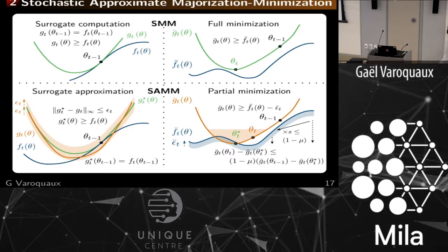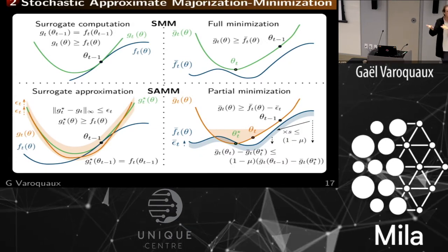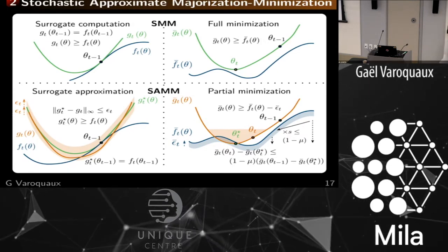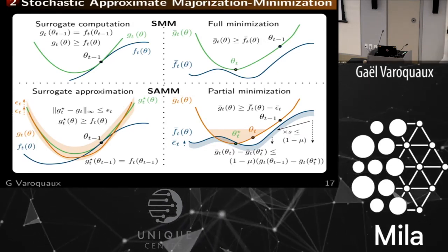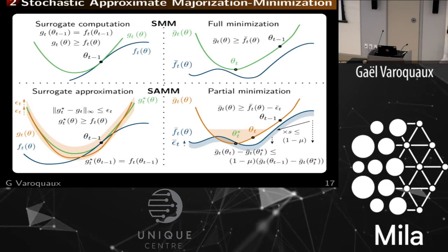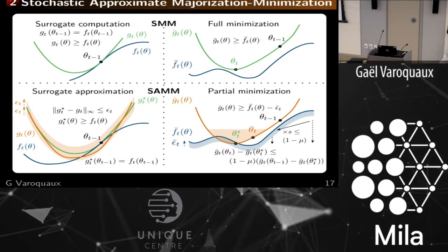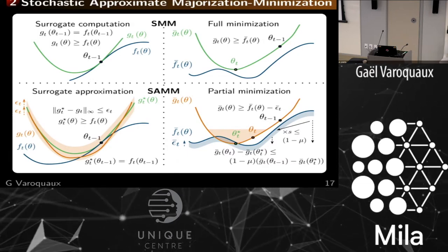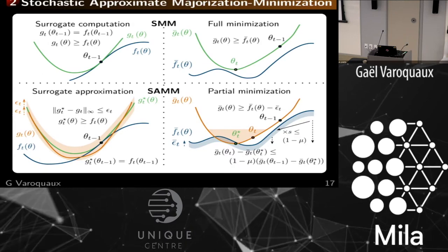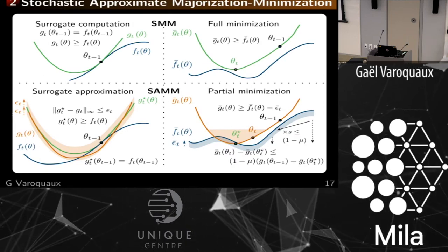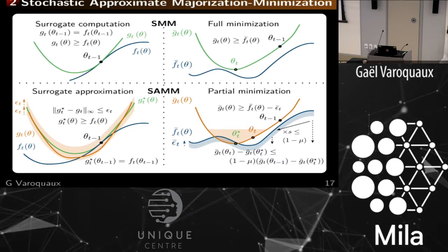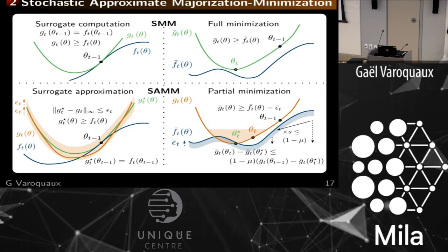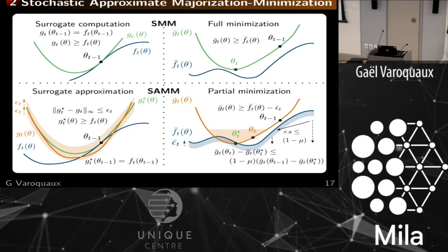Both the approximation and the minimization need to be decreasing — we'll put math on this. If you want to prove convergence, you need these things to be decreasing: the approximation quality and the partial optimization error. The hard part is getting the surrogate function to converge to the approximate surrogate, and the approximate surrogate to converge to the real surrogate. For this, we need variance reduction and memory — without memory we can't get it cheaply.